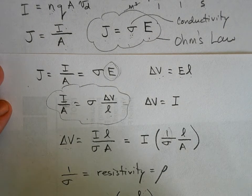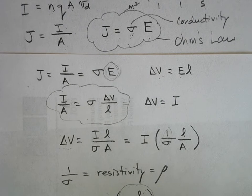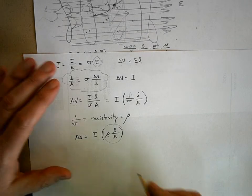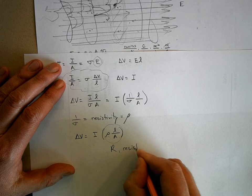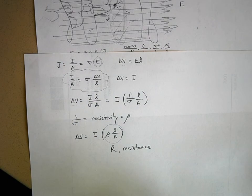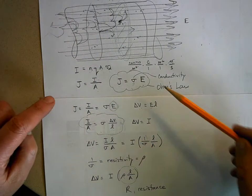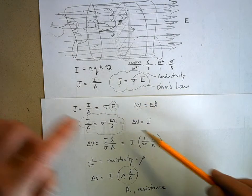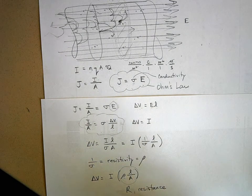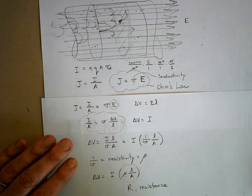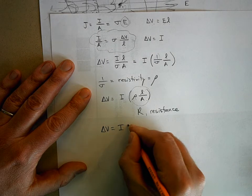We take all this and we combine it into a single term called R, which stands for resistance. I've gone through this torturous derivation that starts with drift velocity, gets to Ohm's Law, makes these substitutions, redefines the reciprocal of conductivity as resistivity — and you get this wonderful little equation: ΔV = IR. Ohm's Law.